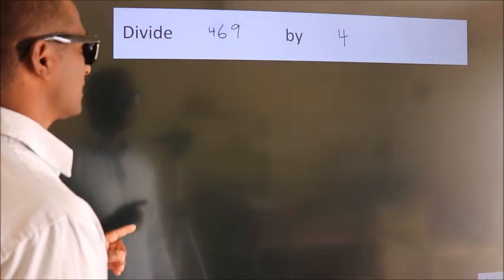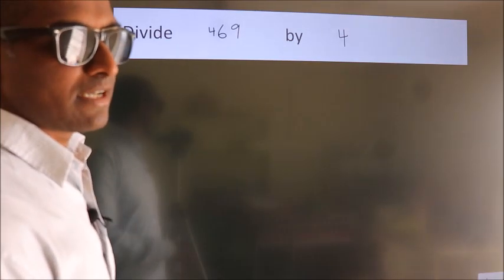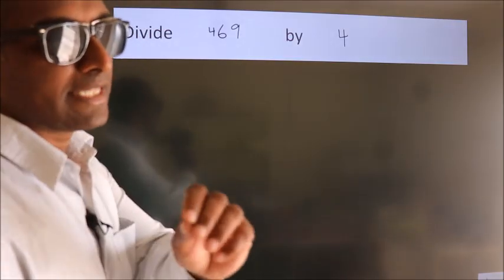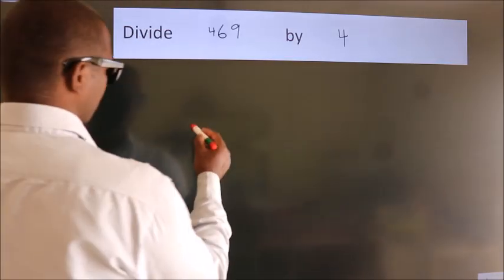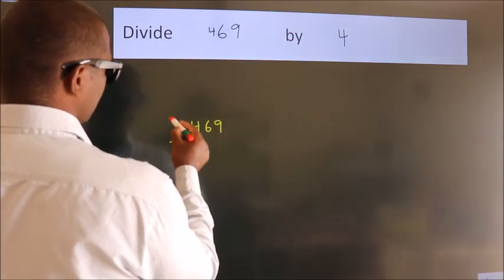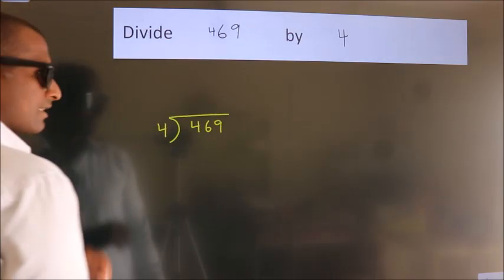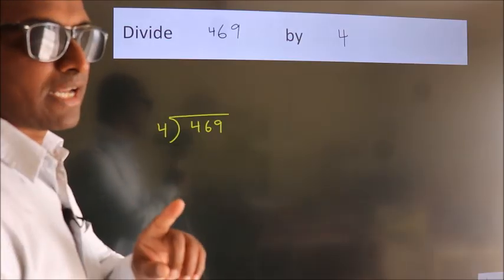Divide 469 by 4. To do this division, we should frame it in this way. 469 here, 4 here. This is your step 1.